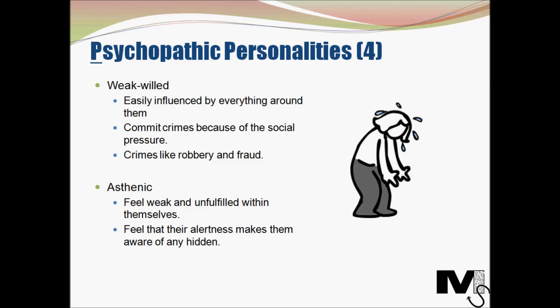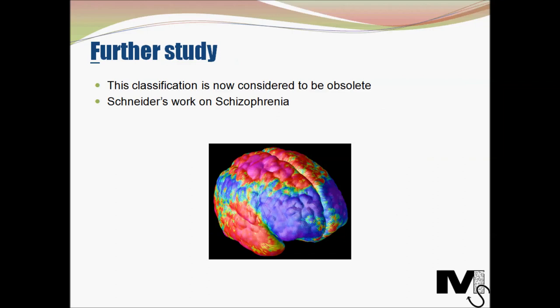Those are the 10 types of psychopaths as elaborated by Snyder. This is quite a vast field and it's not possible to look into every single concept he elaborated. Interestingly, this classification of psychopaths is now considered to be obsolete, but it did serve as a very important milestone in psychopathy at the time and helped us develop a deeper understanding of the psychopathic mind. For those who want to explore more of Snyder's work, his research on schizophrenia is also highly recommended.